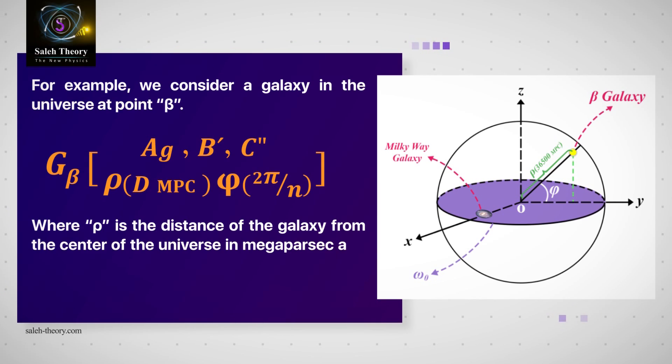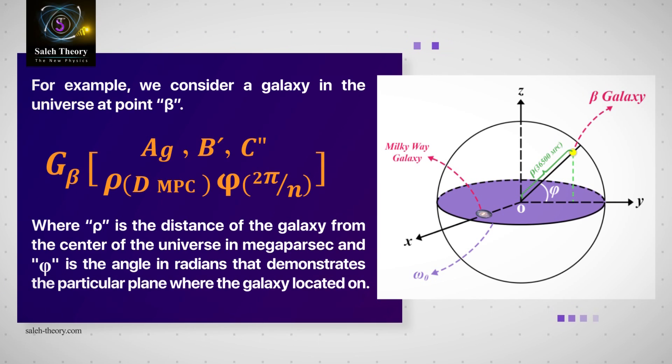For example, we consider a galaxy in the universe at point beta, where rho is the distance of the galaxy from the center of the universe in megaparsec, and phi is the angle in radians that demonstrates the particular plane where the galaxy is located on.